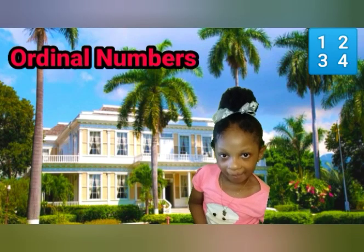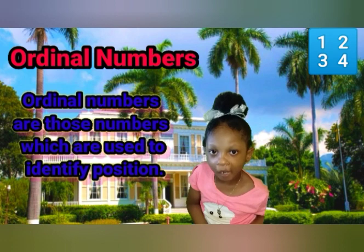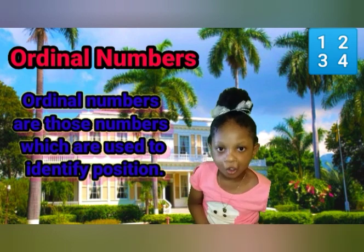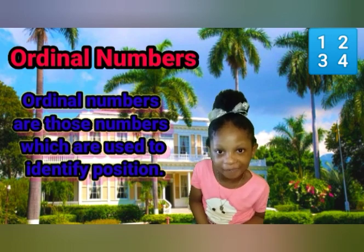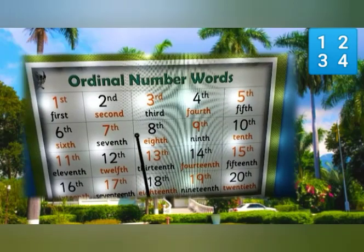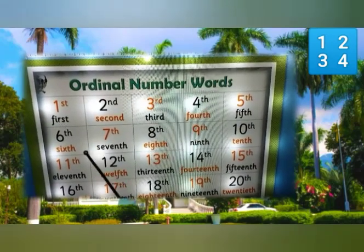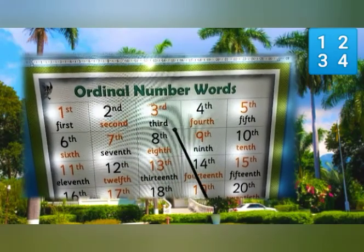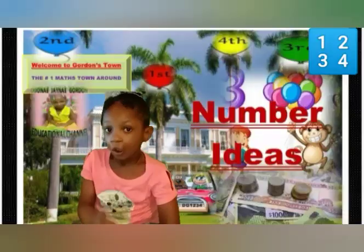Ordinal numbers are those numbers which are used to identify position. Here are some examples. I am going to say the first five for you: first, second, third, fourth, fifth.